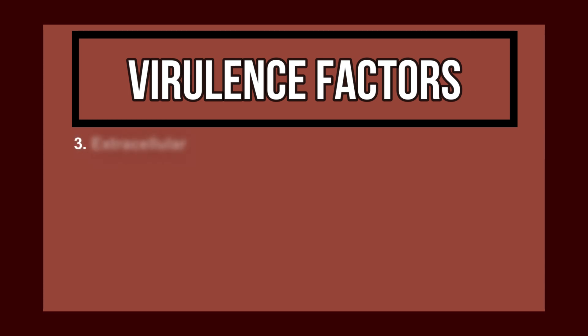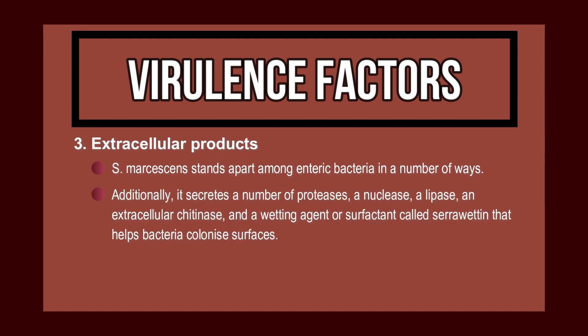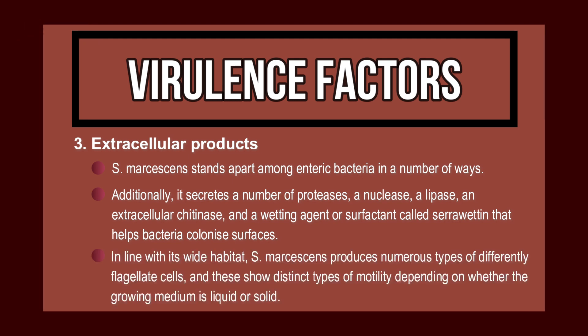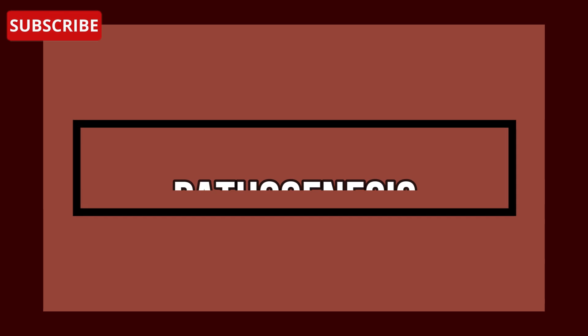The structure of LPS in Serratia marcescens varies because it carries more than 25 somatic antigens. The third virulence factor is extracellular products: Serratia marcescens secretes proteases, nucleases, lipase, and a wetting agent or surfactant called serrawettin that helps bacteria colonize surfaces. Serratia marcescens produces numerous types of flagellated cells showing distinct types of motility depending on whether the growing medium is liquid or solid.